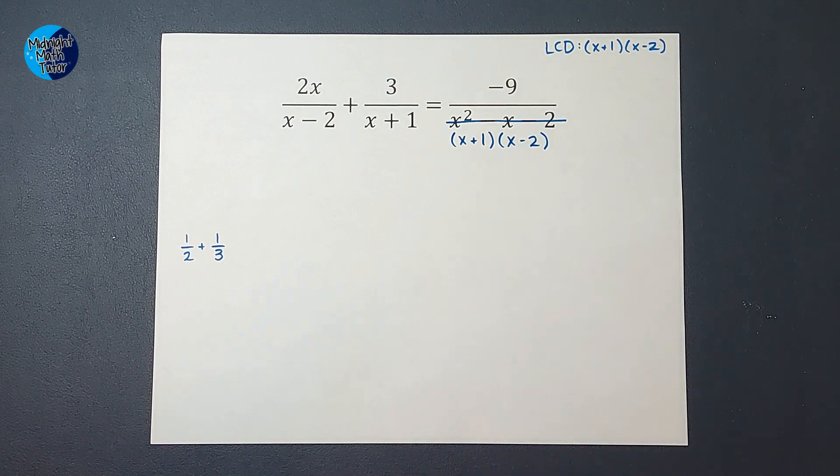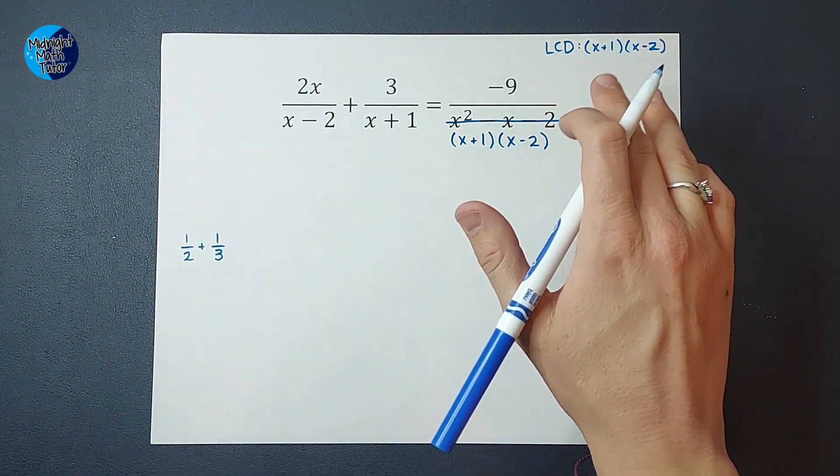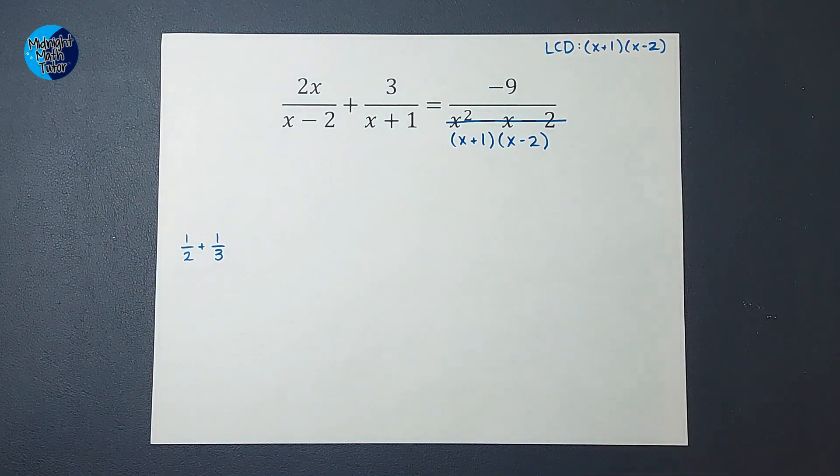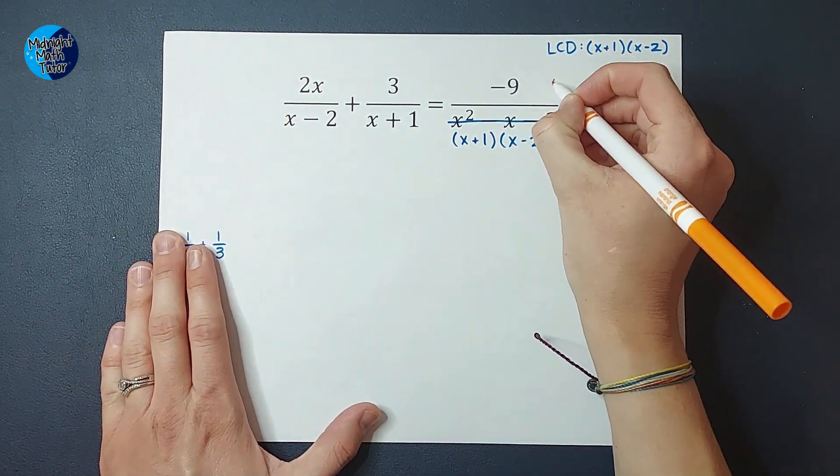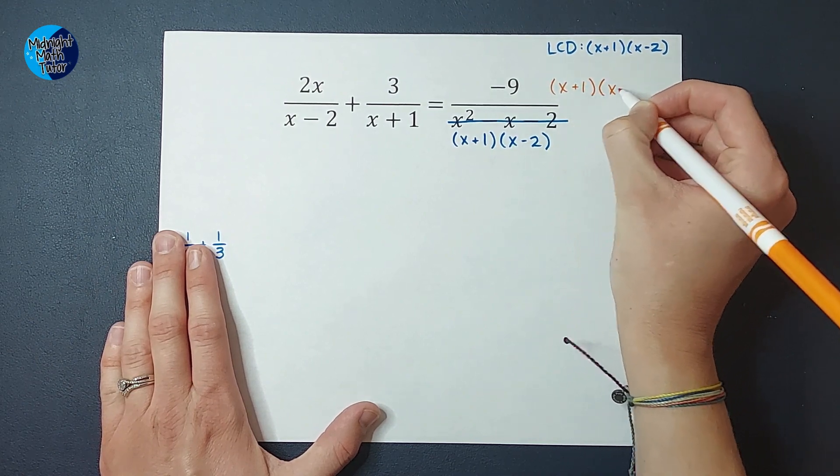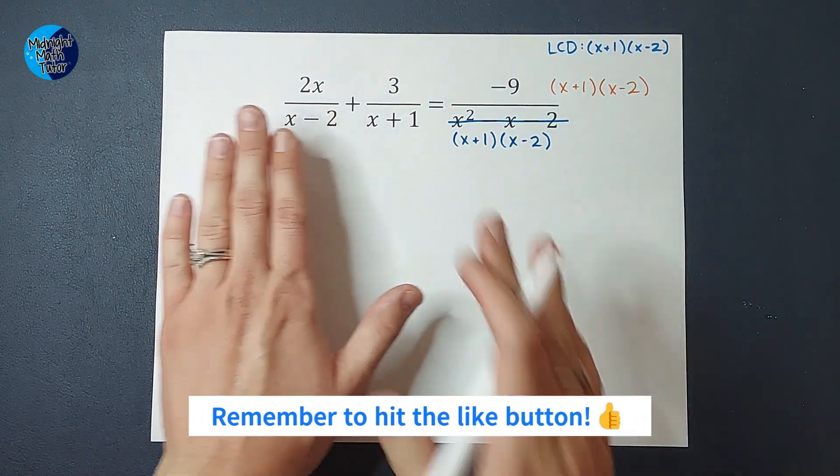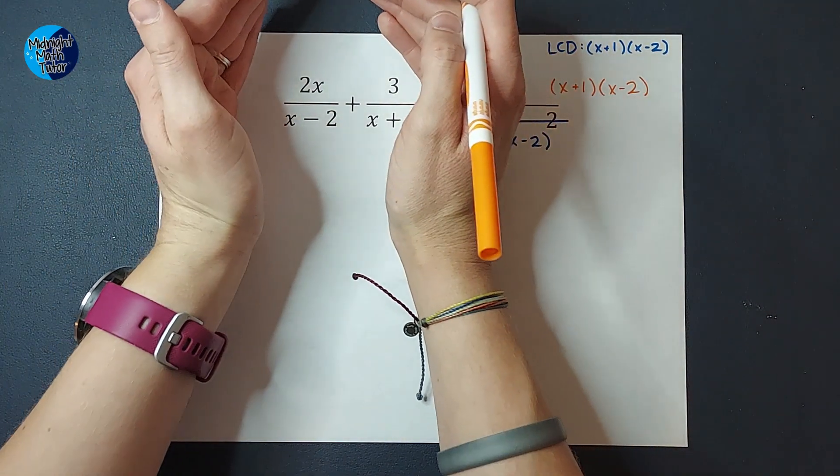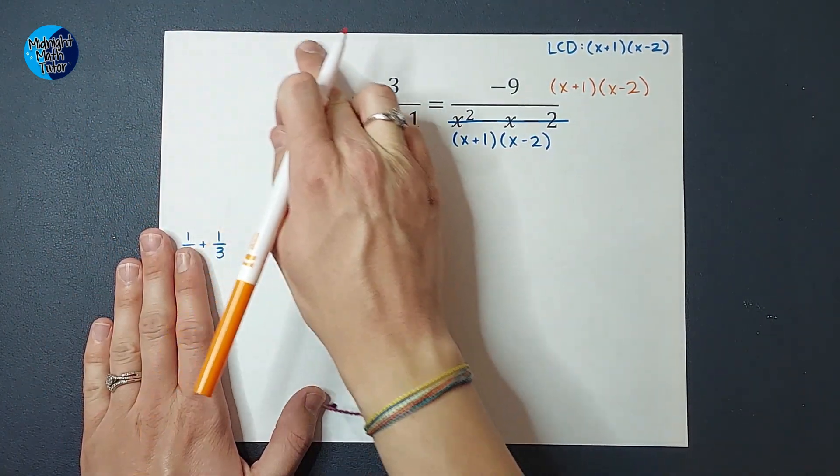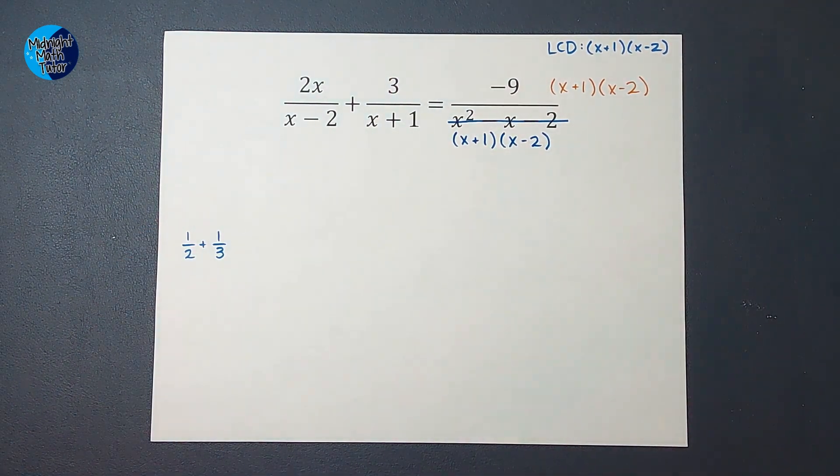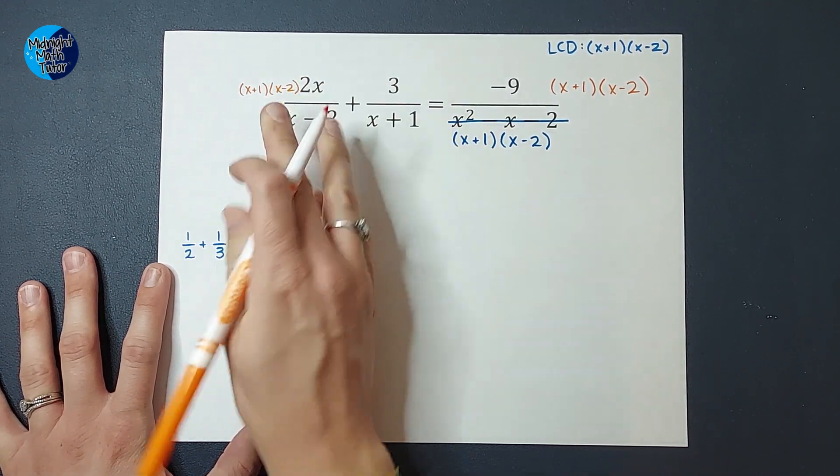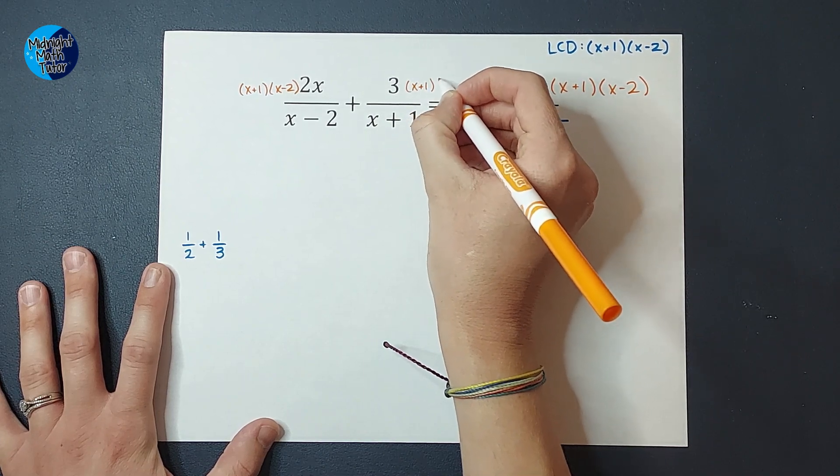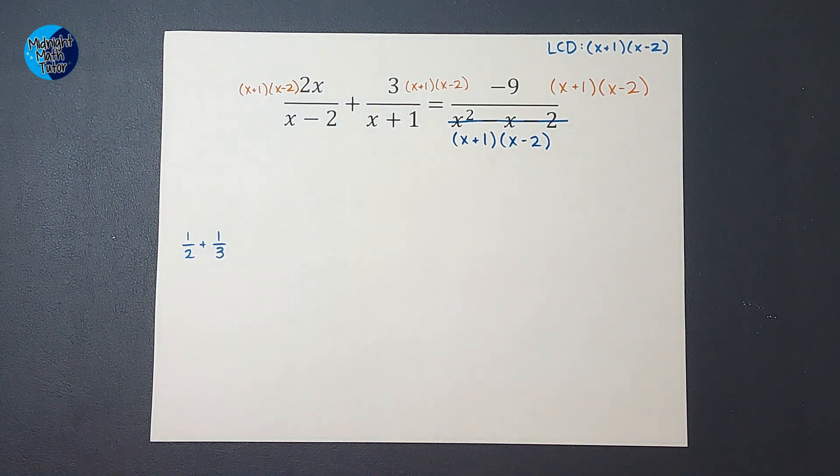Now what do I do? Now I'm going to multiply everything by x plus 1 times x minus 2. So I'm going to use a different color so we can kind of see it a little distinctively. So I'm going to multiply this side of the equal sign by x plus 1 times x minus 2, and I'm going to multiply this side. Now when I multiply this side, we got to think of this as a group. They're being added. So if I multiply this side, I would be distributing it in to both of them. So I need to multiply both of these by x plus 1 times x minus 2. And as long as I did it to both sides, I'm good. My equation stays true.